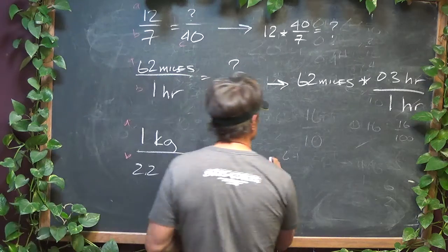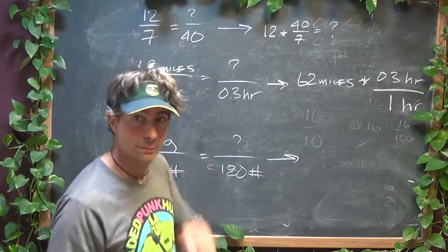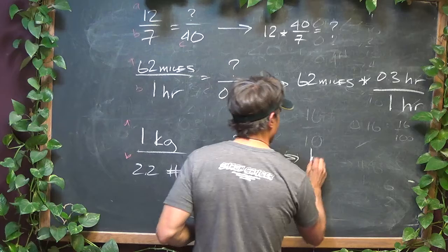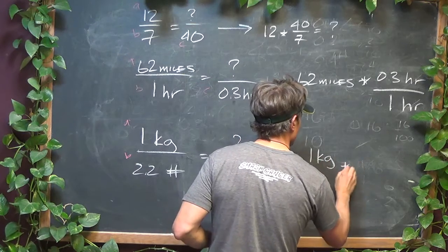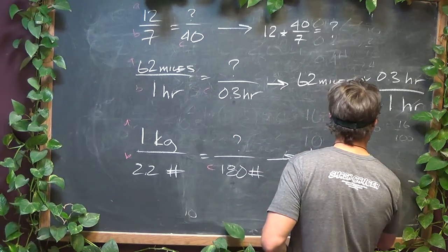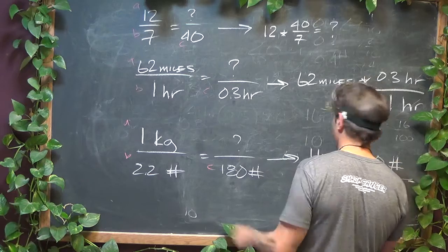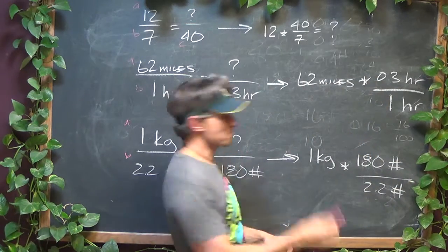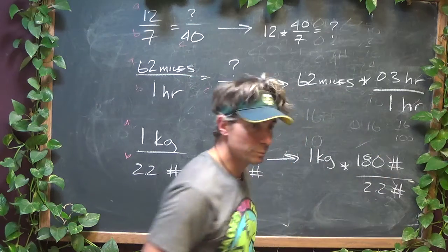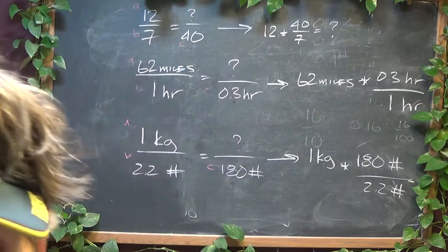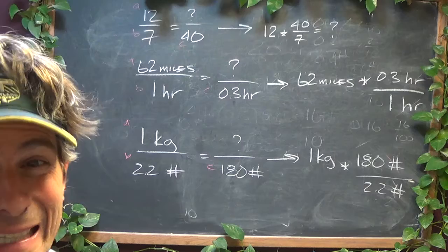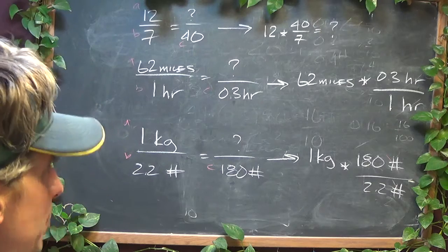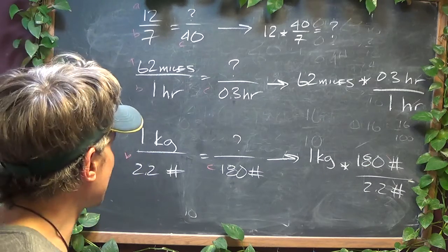One kilogram times 180 pounds over 2.2 pounds, and again, same. It doesn't matter if it's feet, pounds, inches, units, dollars, it doesn't matter. As long as it's the same unit, you result in a ratio and not a rate.